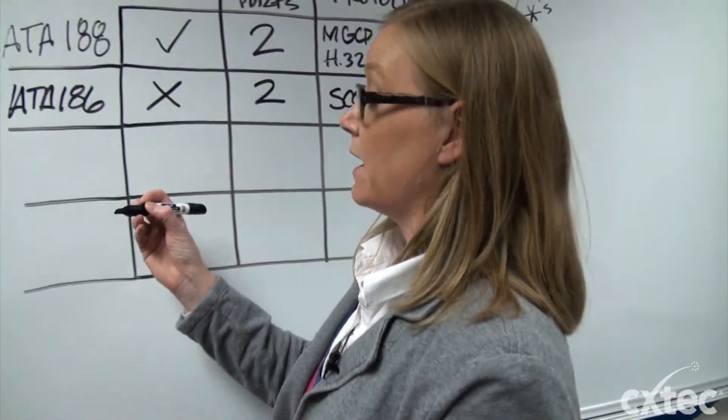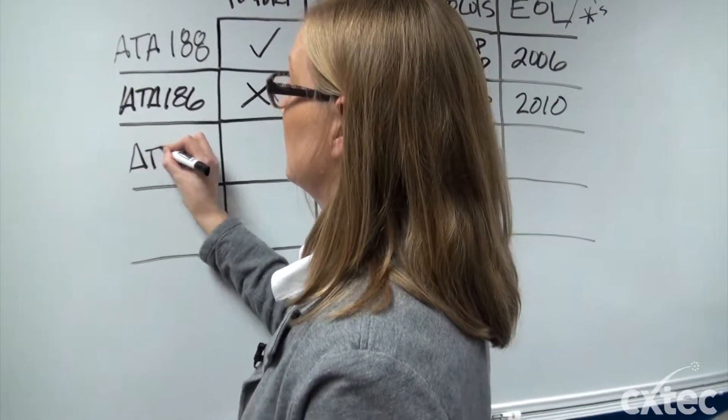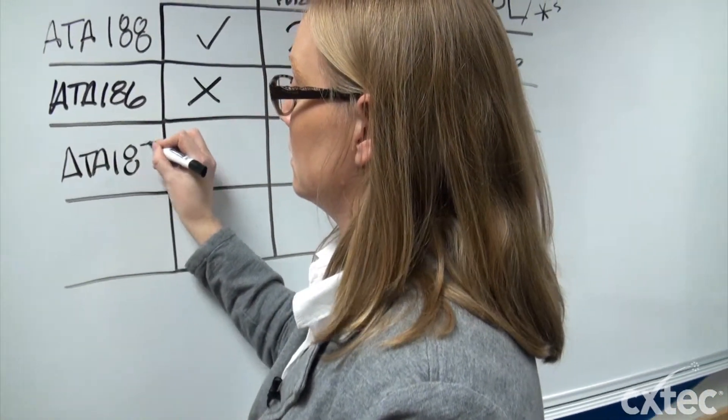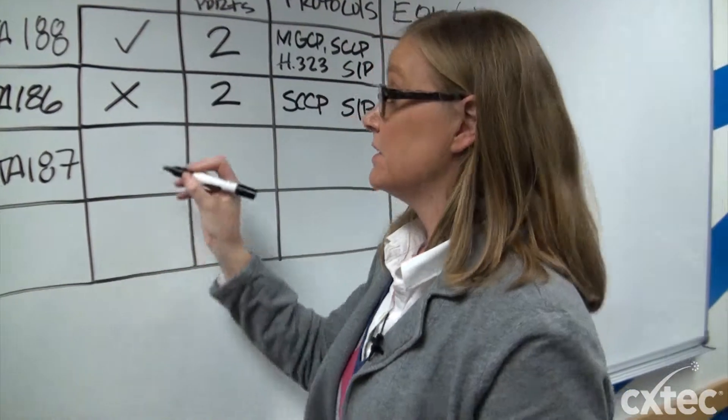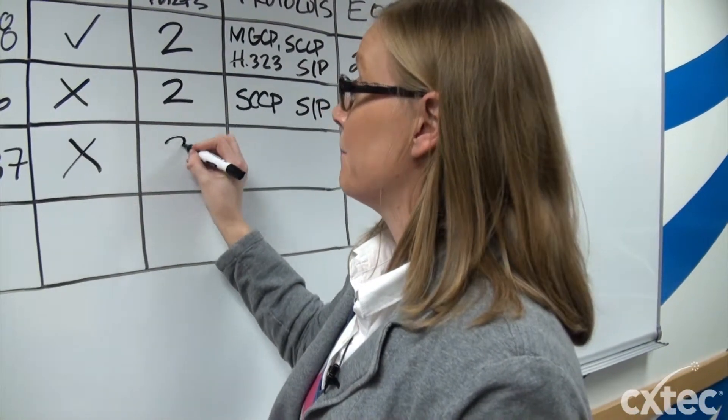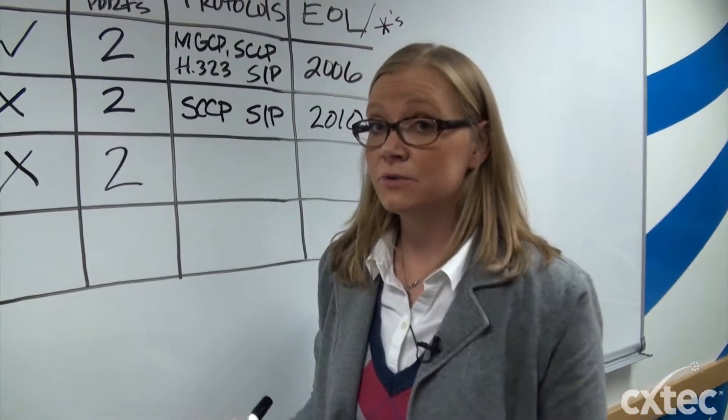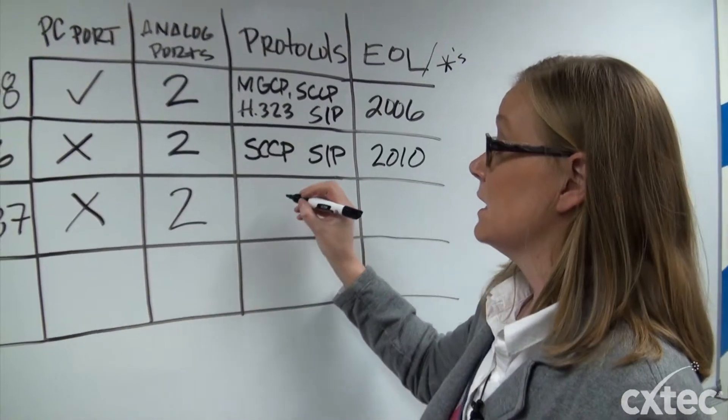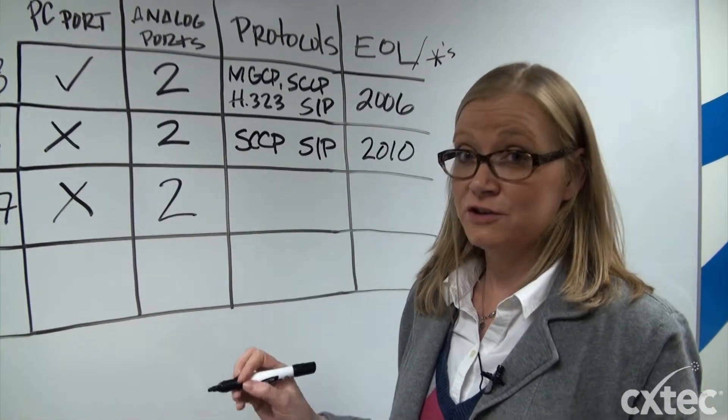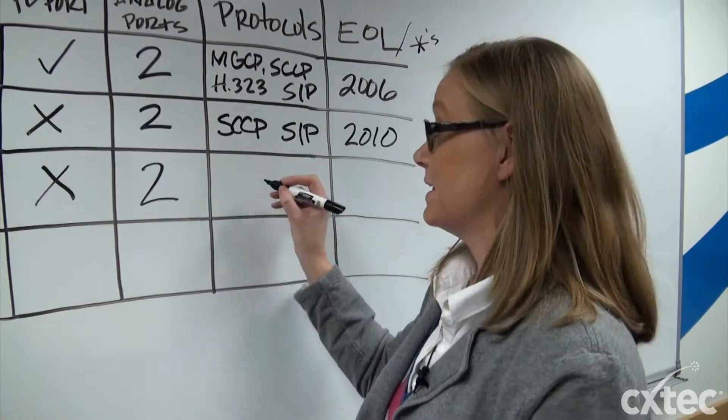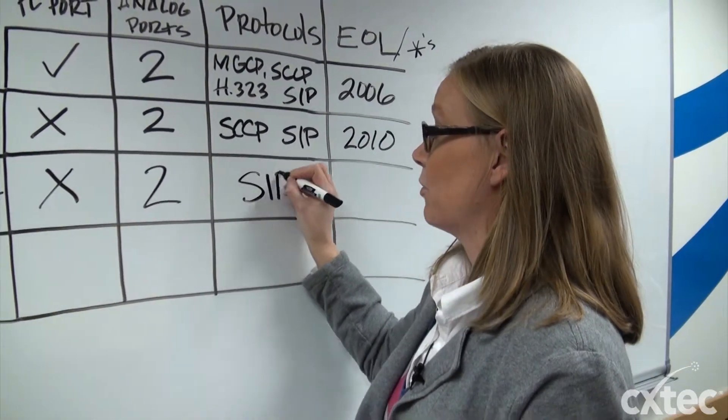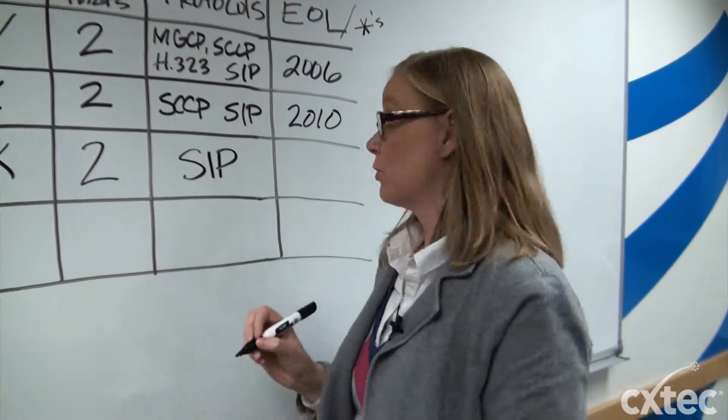Cisco replaced the ATA 186 with an ATA 187. The ATA 187 still had no PC port but did have two analog ports that were still supported on the device. Now this is when the big change happened and when most customers could not use the ATA 187 is because it only supported SIP for its signaling protocol.